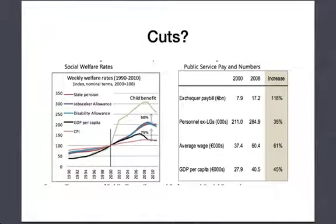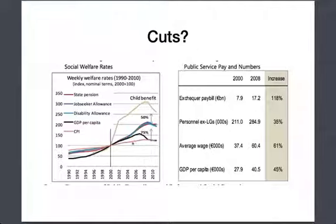Cuts — what should you cut? Should you cut social welfare rates, public sector pay, job seekers allowance, disability allowances? One thing that's certain is that child benefit exploded over the boom, increasing massively up until 2008, much higher than the rate of inflation measured by the CPI. The public sector pay bill has increased something like 120% while wages increased by 61%. Overall, the public sector is bloated both in how much it spends and how much it pays its workers.